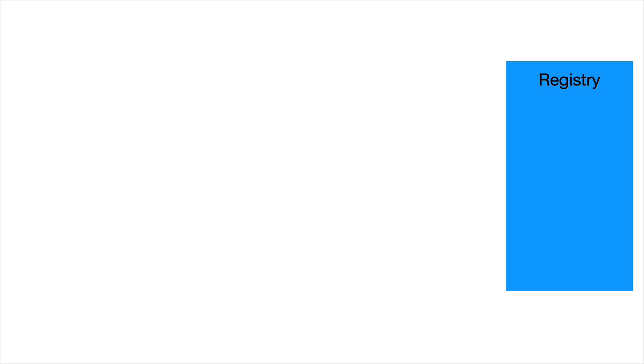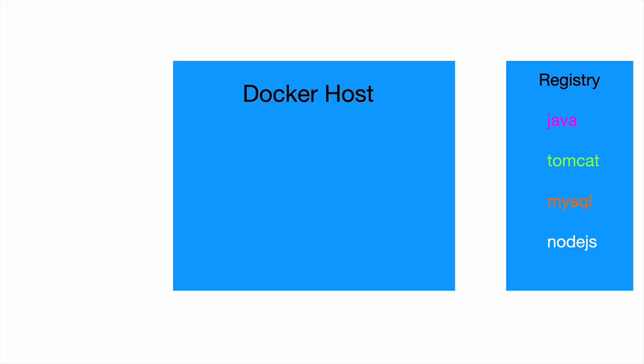Docker comes with a Docker Hub or registry where we will have tons of images. You can explore the Docker Hub for various images that are already available, like Java, Tomcat, MySQL, Node.js, etc. All these come with an operating system for free — this could be Linux, etc. If it is Windows, it will be charged eventually. The Docker host is the machine on which we have the Docker software or Docker Desktop or Docker virtualization software installed. This could be your laptop, another machine, or on the cloud.